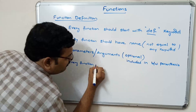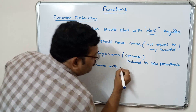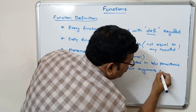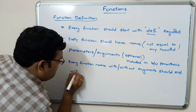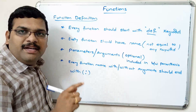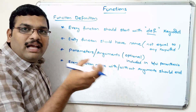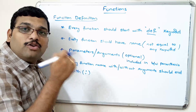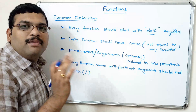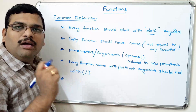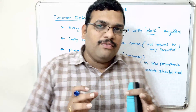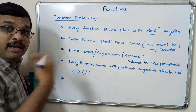The fourth point is that every function name — with or without arguments — should end with a colon. In Python we don't use curly braces like in C; instead, the block of statements is represented using indentation, and the colon achieves that indentation. Every function will also have a return — it can be an empty return or a value return — and the control will return to its calling function.